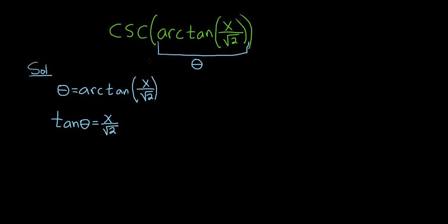So again, arc tangent takes this expression here, x over the square root of 2, and sends it to theta. So the tangent takes theta and sends it back to x over the square root of 2.